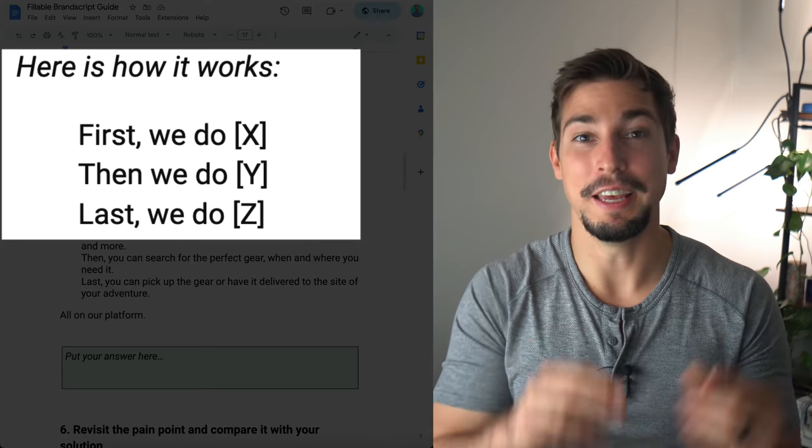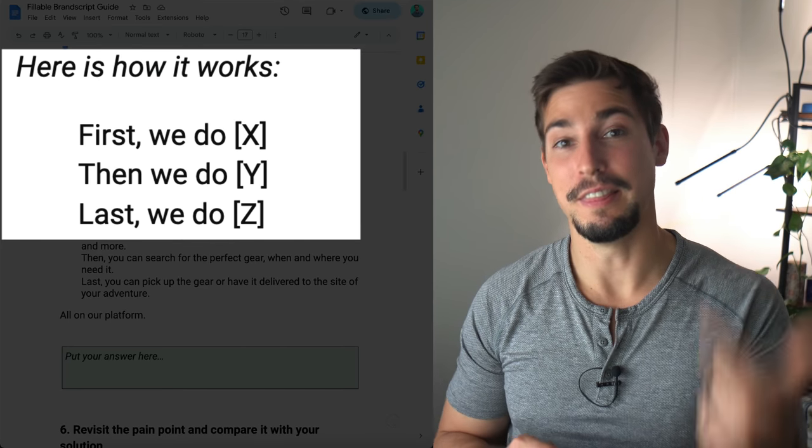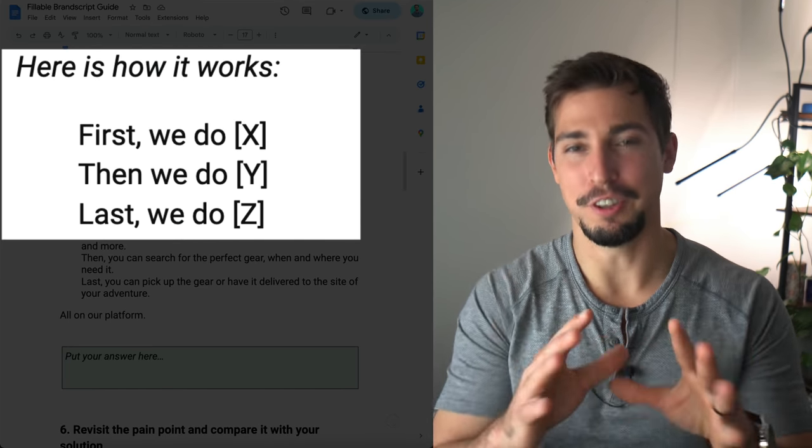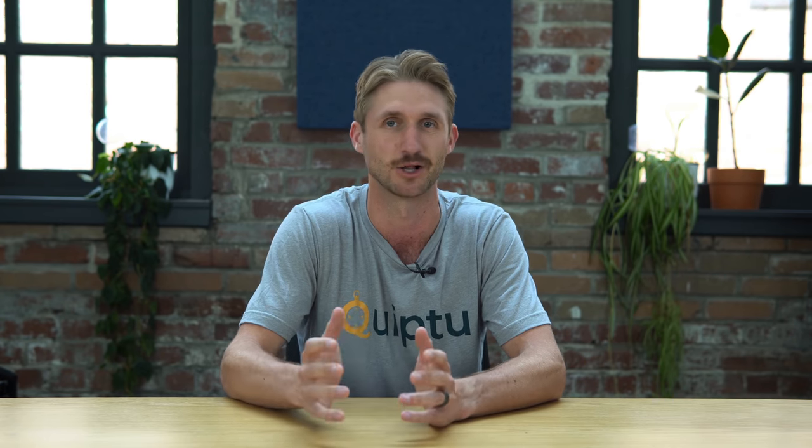Step number five is to give three steps that it takes to do business with you. You're going to want to create more than three steps — just don't. Make it as simple as possible so it seems easy to work with you. In the template we say: 'Here's how it works. First we do X, then we do Y, and last we do Z.' Here's an example: first, owners list the gear like bikes, kayaks, camping sets, and more. Then you can search for the perfect gear when and where you need it. Lastly, you can pick up the gear or have it delivered to the side of your adventure, all on our platform.